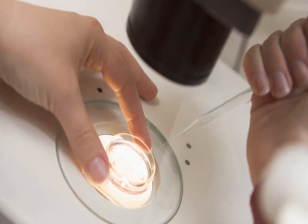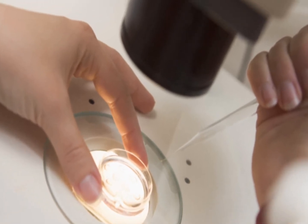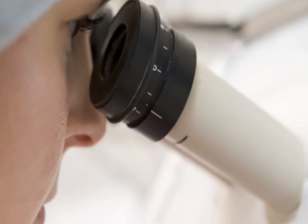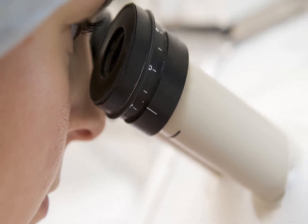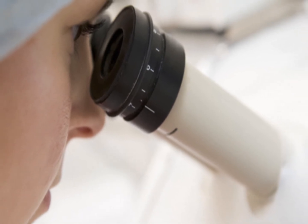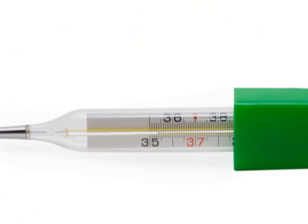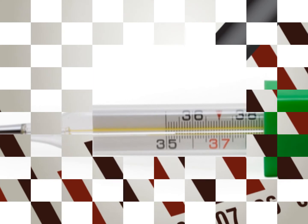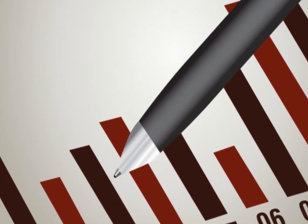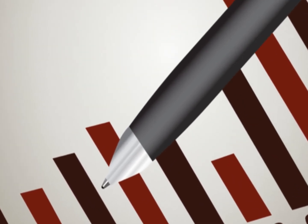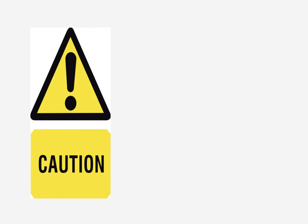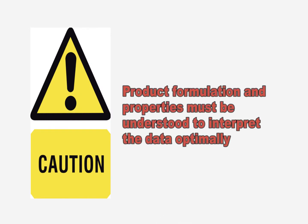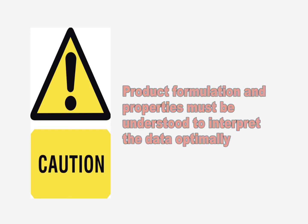Accelerated shelf life studies attempt to predict the shelf life of a product without running a full-length storage trial. This type of study is usually used for a product with a longer shelf life. Acceleration factors such as temperature are applied to the product to attempt to increase the rate of deterioration. The data can be used in predictive mathematical models to project spoilage rates and bacterial growth. Accelerated studies should be used with caution, as one must know a good deal about the specific product formulation and properties to interpret the data optimally.